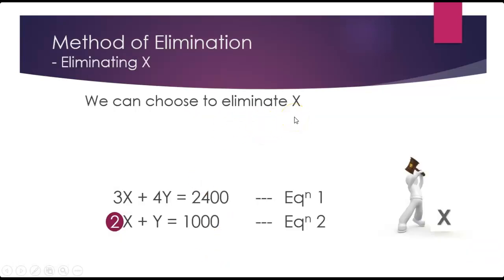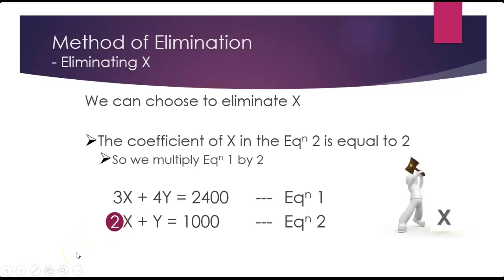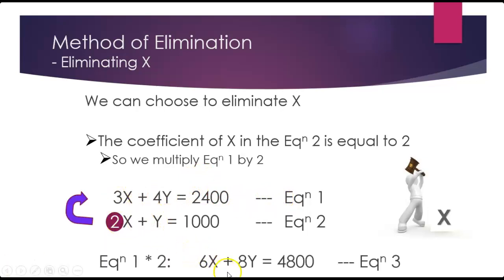We're looking at our cross multiplication. If we're choosing to eliminate x, we want to ensure we have the same coefficient — the same number — before x in both equations. So we're going to cross multiply the x coefficients. Looking at the second equation, the coefficient is 2, so we use that to multiply everything in the first equation. Multiplying equation 1 by 2: 2 times 3 is 6x, 2 times 4 is 8y, equals 2 times 2400 is 4800. We'll label this equation 3: 6x plus 8y equals 4800.